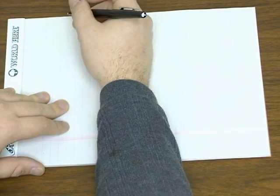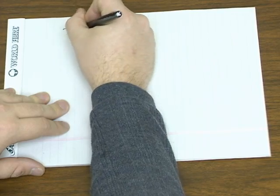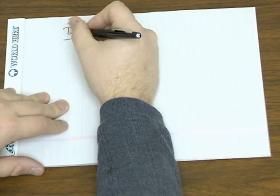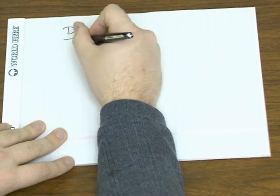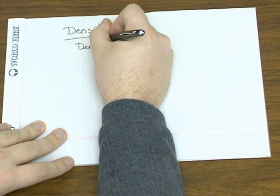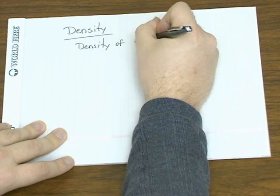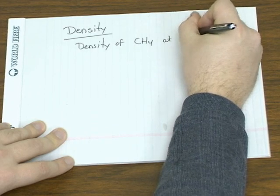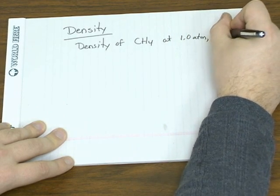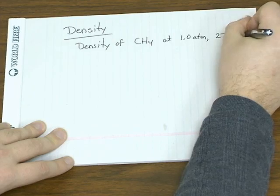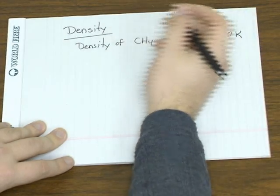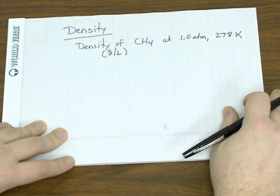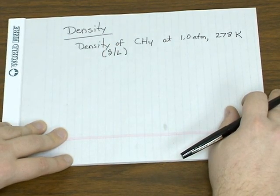Another application of the ideal gas law is we can use it to calculate the density of a gas. So for example, let's say we want to find the density of methane, which is CH4, at one atmosphere pressure and a temperature of 278 Kelvin, in units of grams per liter.